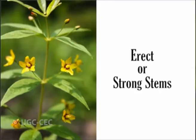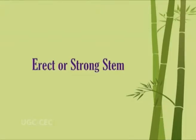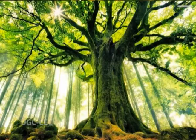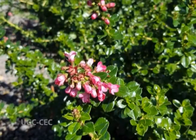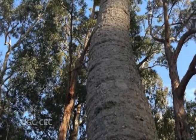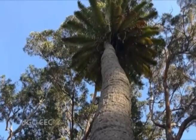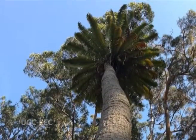The aerial stem can be of two types: erect or strong stems, and weak stems. Erect or strong stems grow straight upright without any support above the surface of the soil, and are found in herbs, shrubs, or trees. These can be subdivided into five types according to stem strength. A caudex is an unbranched, erect, cylindrical, and stout stem marked with scars of fallen leaves, as in palms.